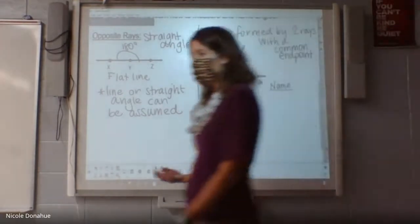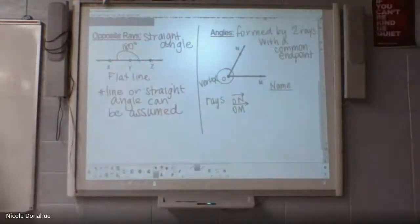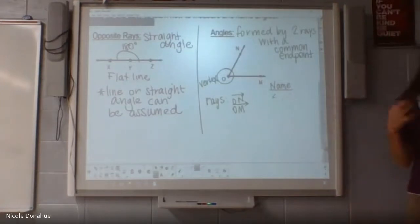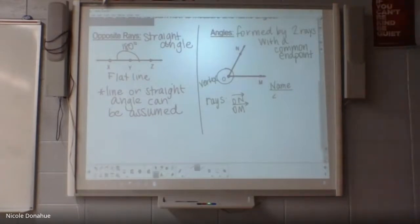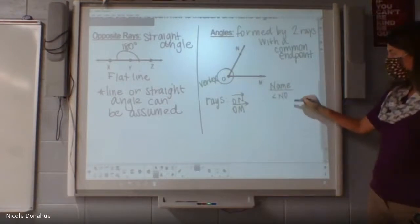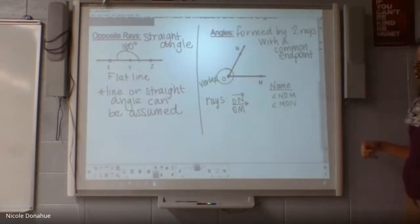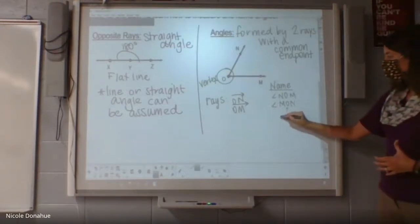The vertex is that common endpoint — kind of the center of our angle, like where the hinge on the door is. Now we're going to name this angle in a very specific way. The vertex has to be in the center of the name. We use a little symbol that looks like a little angle — kind of like a little squished L. I can call it angle NOM or angle MON — both are acceptable names. The O has to be in the center of the name, so O must be the vertex.